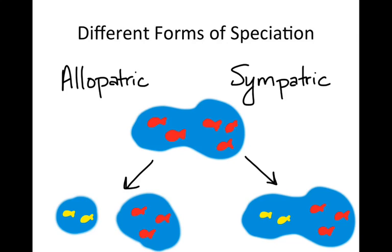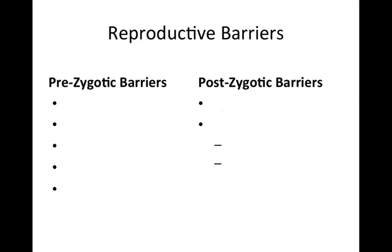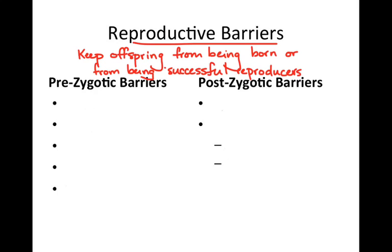Allopatric is short for 'allopatris,' meaning different country, and 'sympatris' means same country — so you can use that to remember what's going on. All speciation comes from some sort of reproductive isolation, because whether populations are isolated physically or not, you can look at how successful they are at interbreeding by looking at these barriers. Barriers keep offspring from being born or from being successful reproducers, because a new species cannot exist if its members cannot mate with each other successfully. If two populations can't breed with each other, they are two species; if they are mating with each other, they are one species.